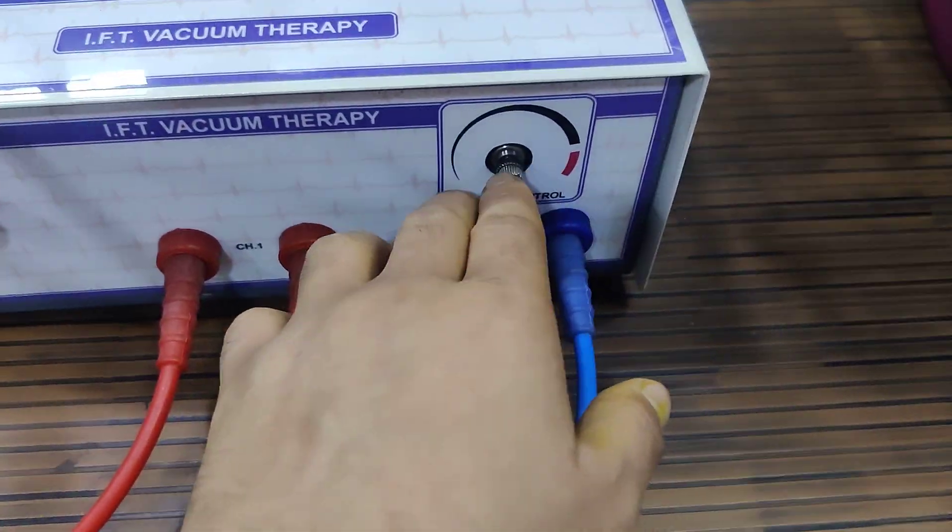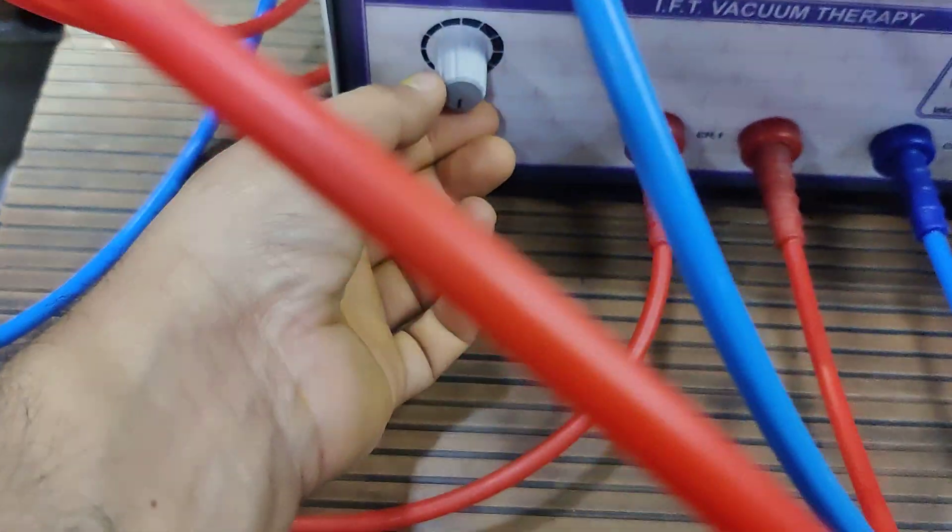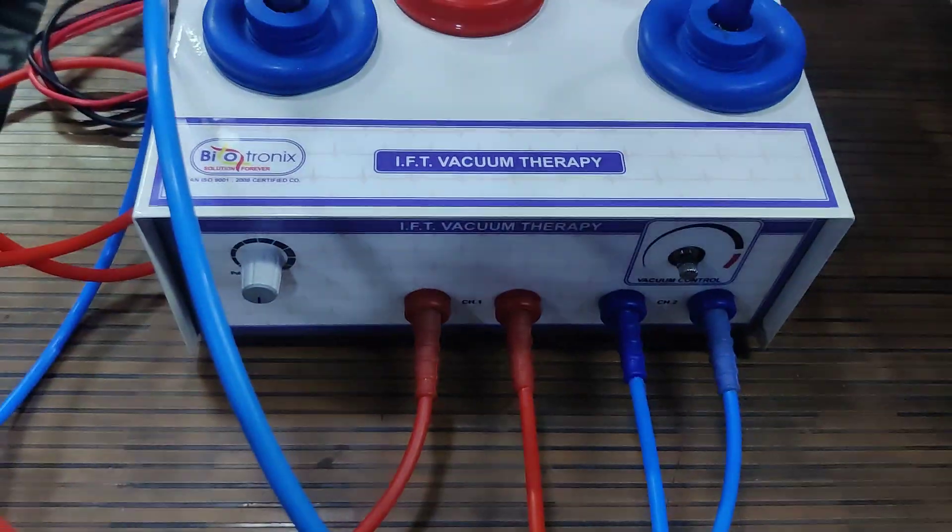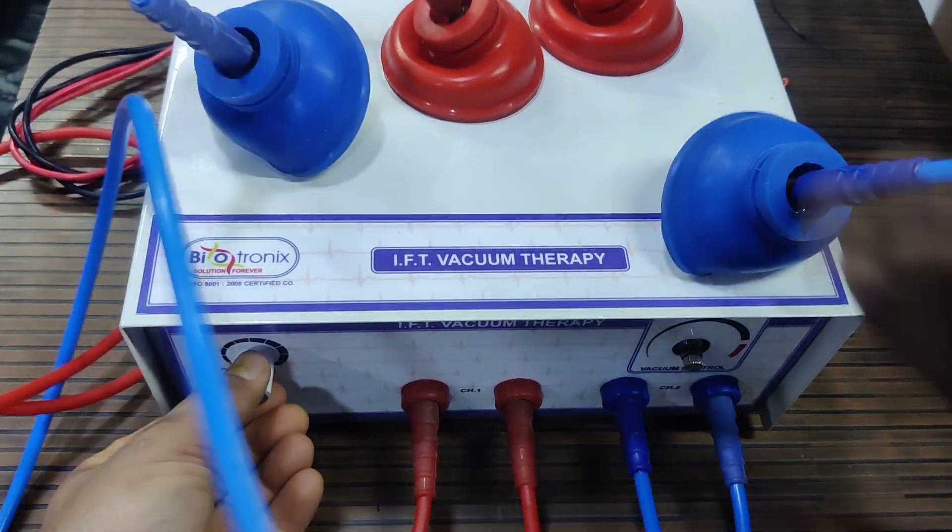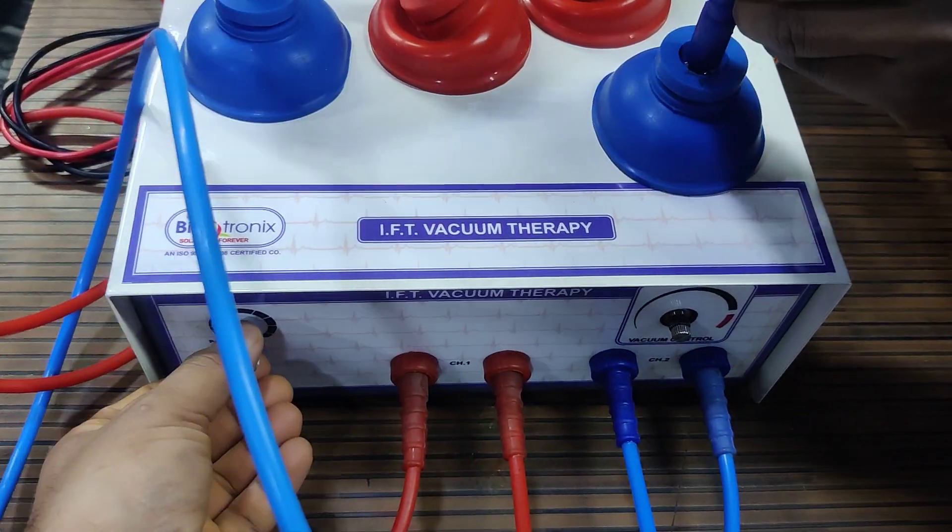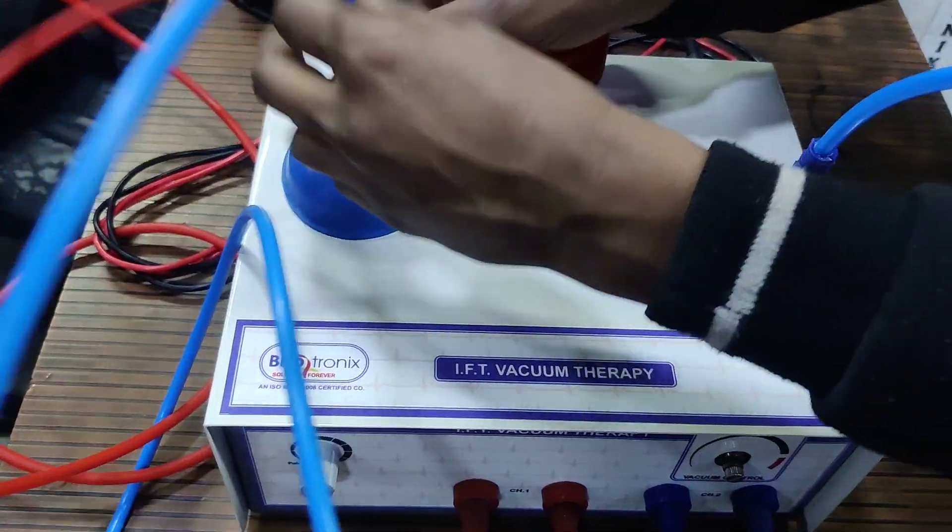And these are the controllers to control the vacuum intensity. And this is the pulse mode. You can use the pulse mode to get the pulse of the vacuum. This is the vacuum working in the pulse mode.